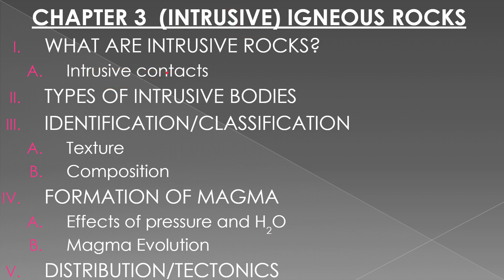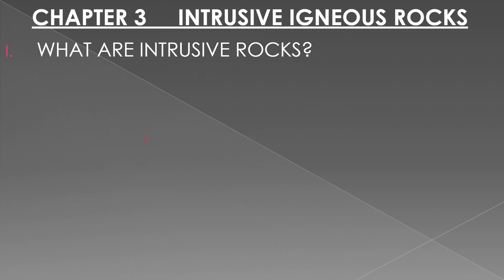Chapter 3 covers igneous rocks, but we're going to shorten it to intrusive rocks specifically. We'll talk about what intrusive rocks are, the different types of intrusive bodies, and I'll touch a little bit on classification — though I'll save most of that for class. Igneous rocks are fairly easy to classify; they make a lot of sense and fit into their individual categories nicely. So what are intrusive rocks?